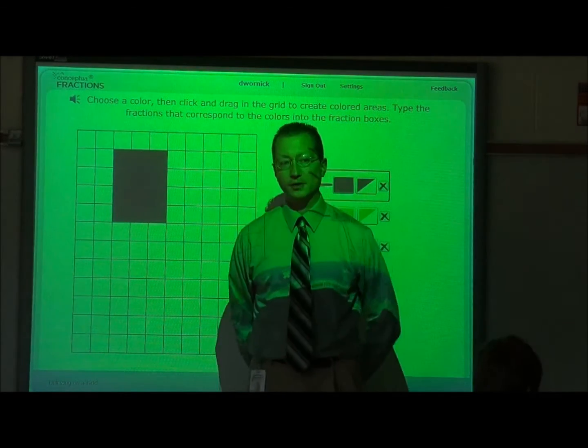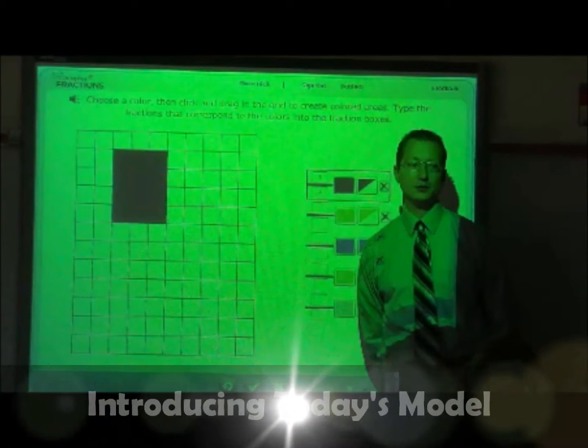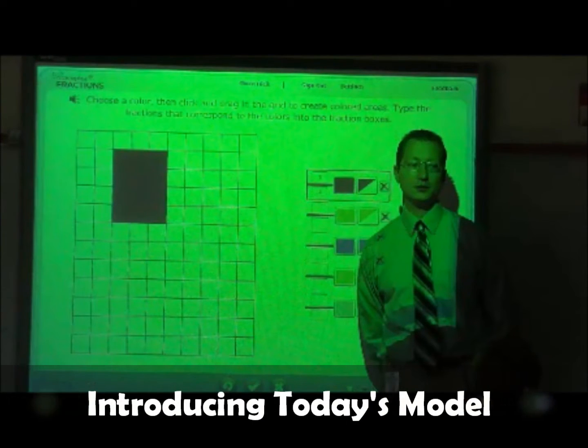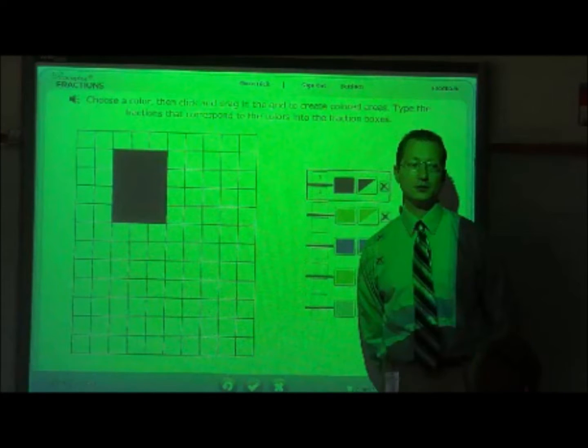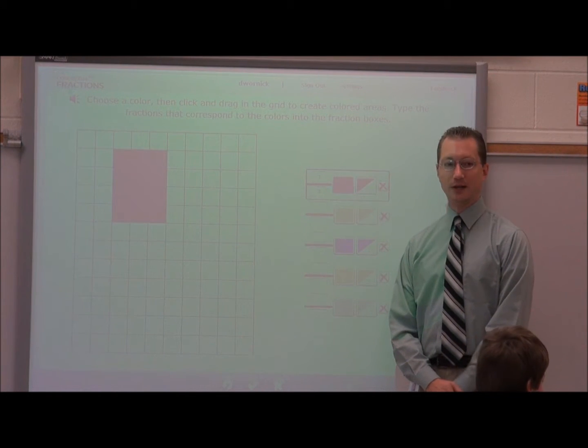Today we're going to continue our work with fractions by exploring fractions with unlike denominators. If that rectangle represents one whole, what would one-third look like?